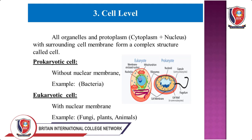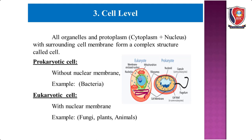When all organelles and protoplasm — cytoplasm plus nucleus — together with the surrounding cell membrane form a complex structure, that is called a cell. In case of simple organisms like bacteria and protists, the entire organism consists of a single cell. In most fungi, plants, and animals, it consists of trillions of cells. We divide cells into two types: prokaryotic and eukaryotic cells.